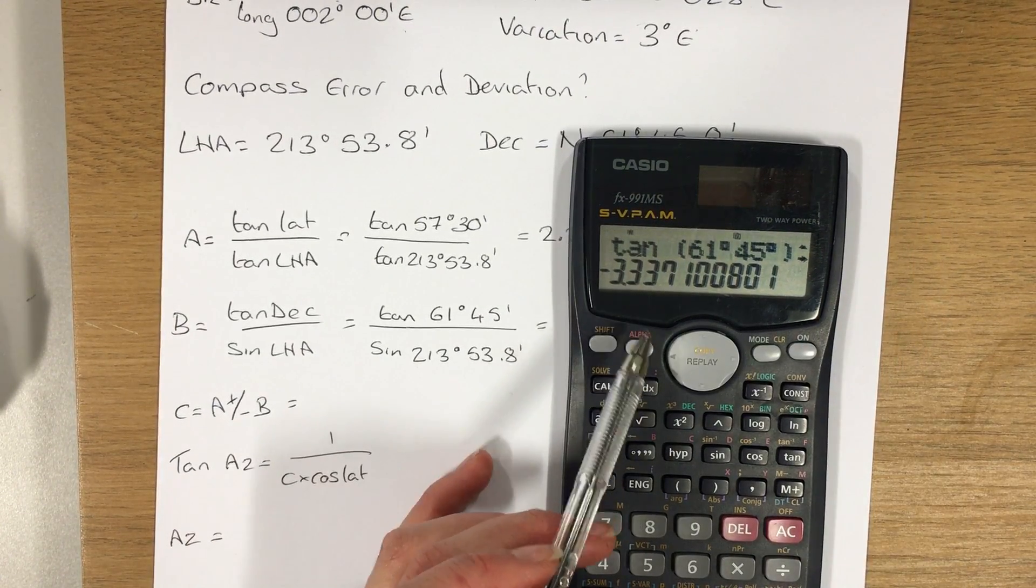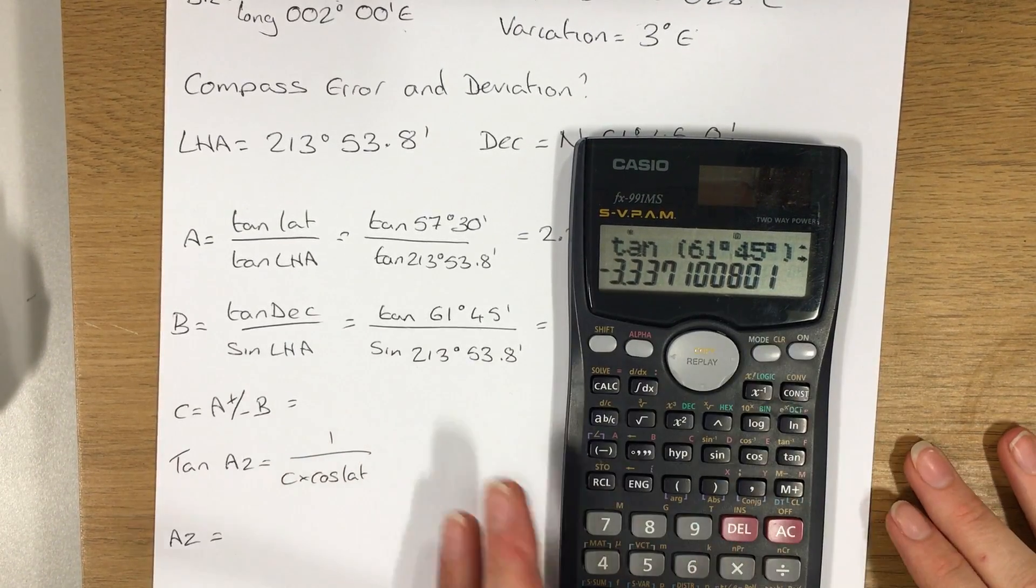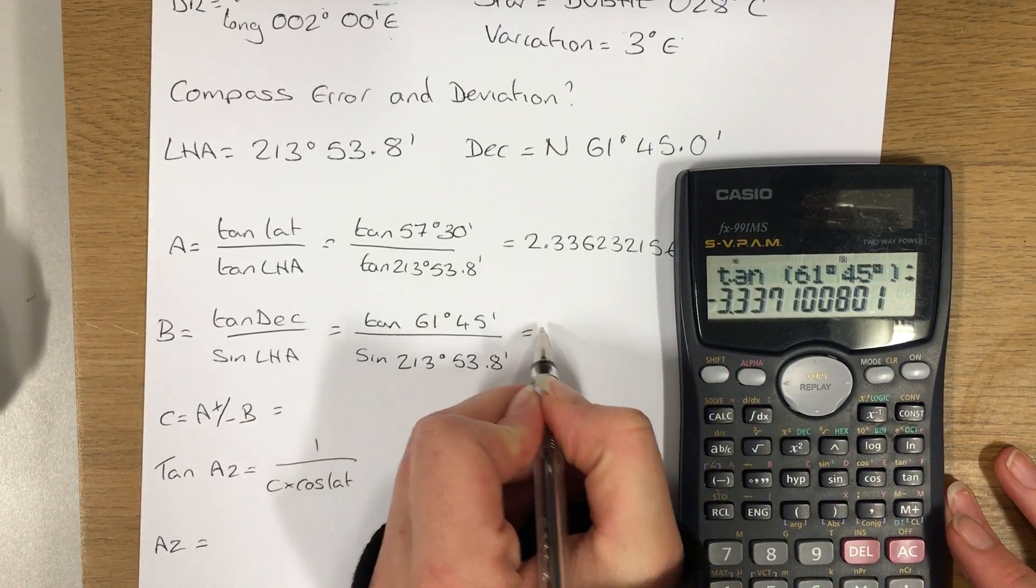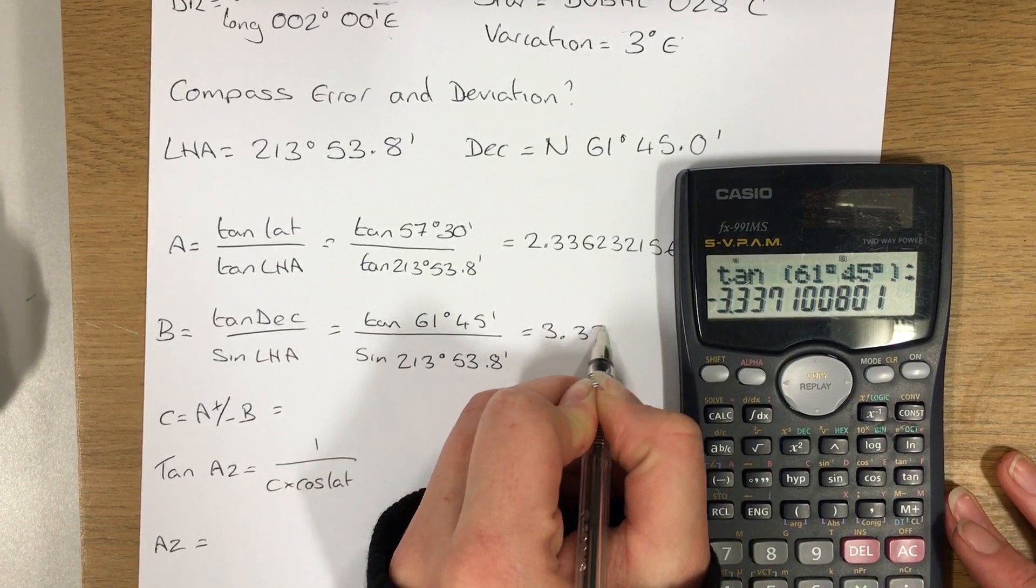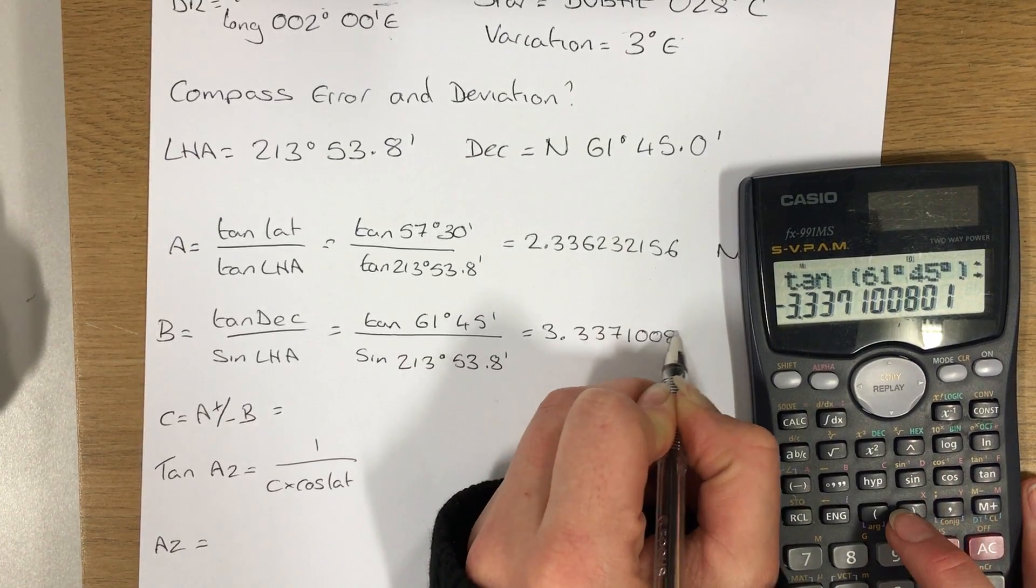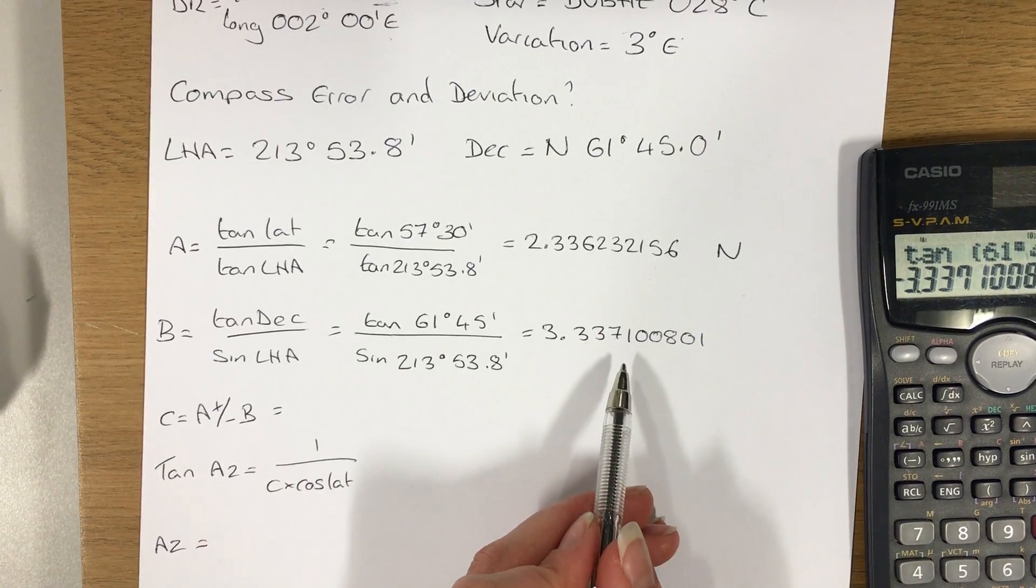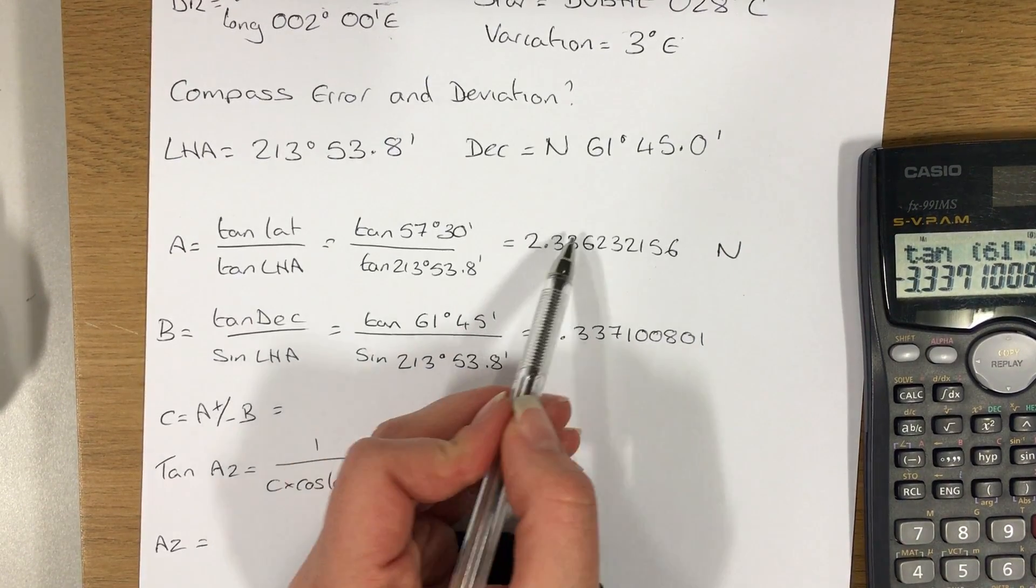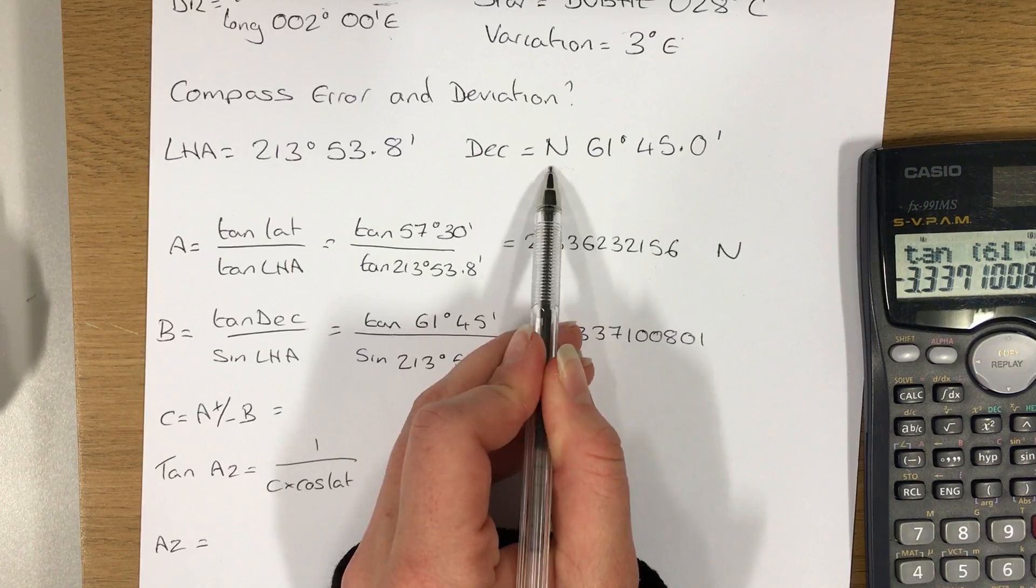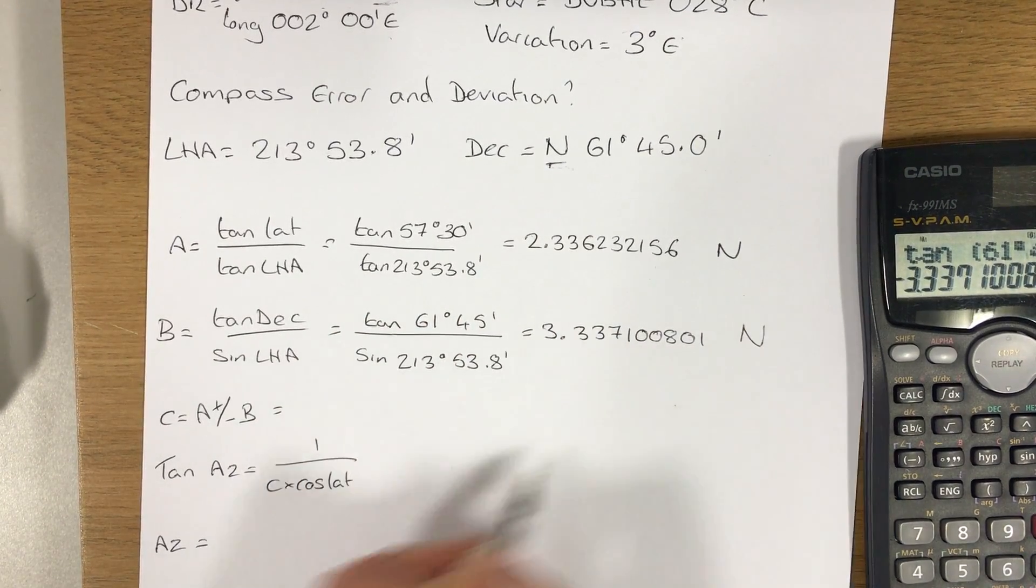And that gives me my value for B. Now because I'm going to be giving B a name as well, I can ignore this little minus sign that comes out and just write the number as if it was positive. Now again, I need to give B a name, and that's going to be the same name that my declination has got. My declination is north, so B is also going to be named north.